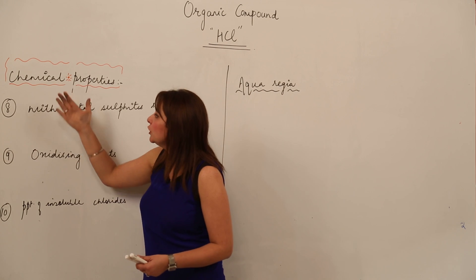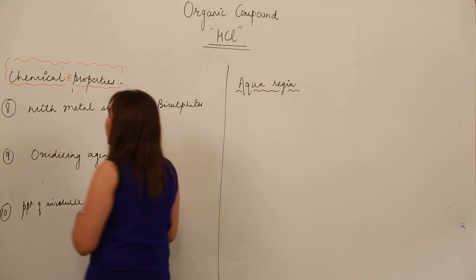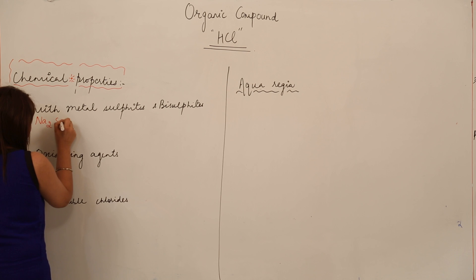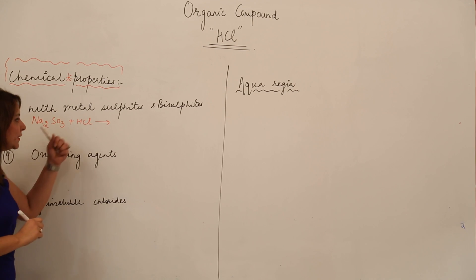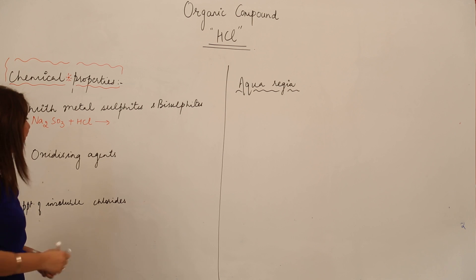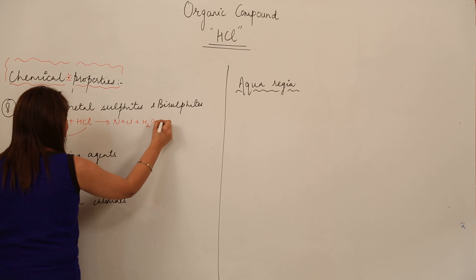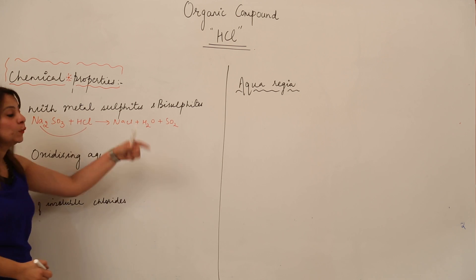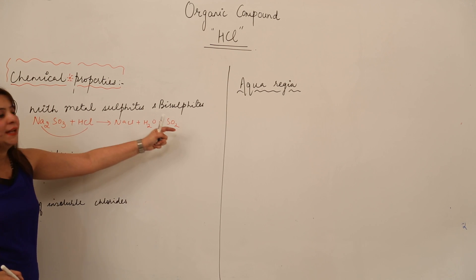The eighth property is the reaction of HCl with metal sulfites and bisulfites. Suppose I take sodium sulfite, Na2SO3, and react it with hydrochloric gas. This is a double displacement reaction. What is going to form? NaCl plus water vapor and sulfur dioxide gas. SO3 gets converted into SO2, forming NaCl, H2O, and SO2.